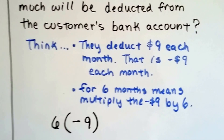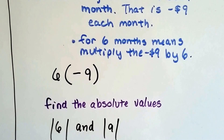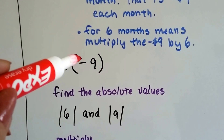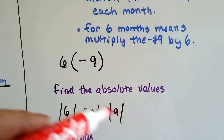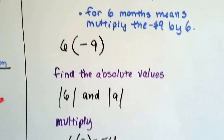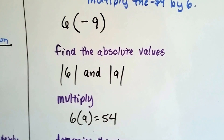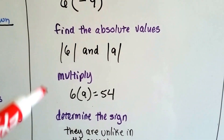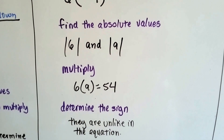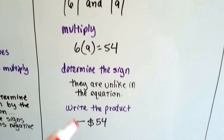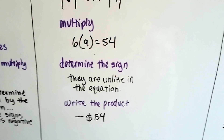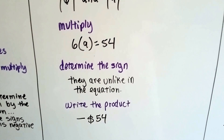So six times negative nine — we find the absolute values of both numbers. The absolute value of positive six is six, and the absolute value of negative nine is nine, just how far away they are from zero. We multiply them: six times nine is 54. We determine their sign by looking at the equation — we have a positive and a negative, they're unlike, so it's going to be negative. The product is negative $54 — that's how much is going to come out of the customer's account.